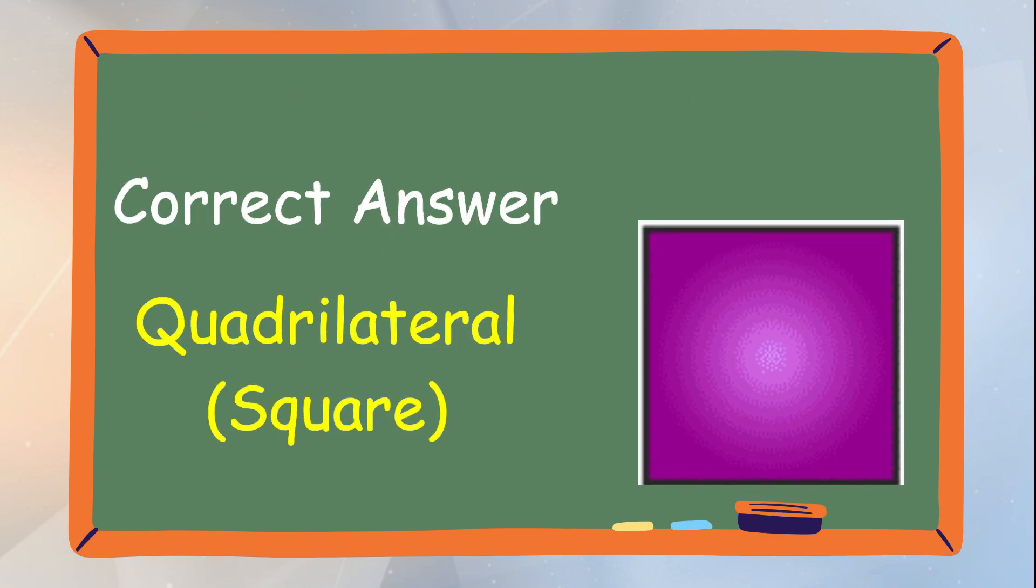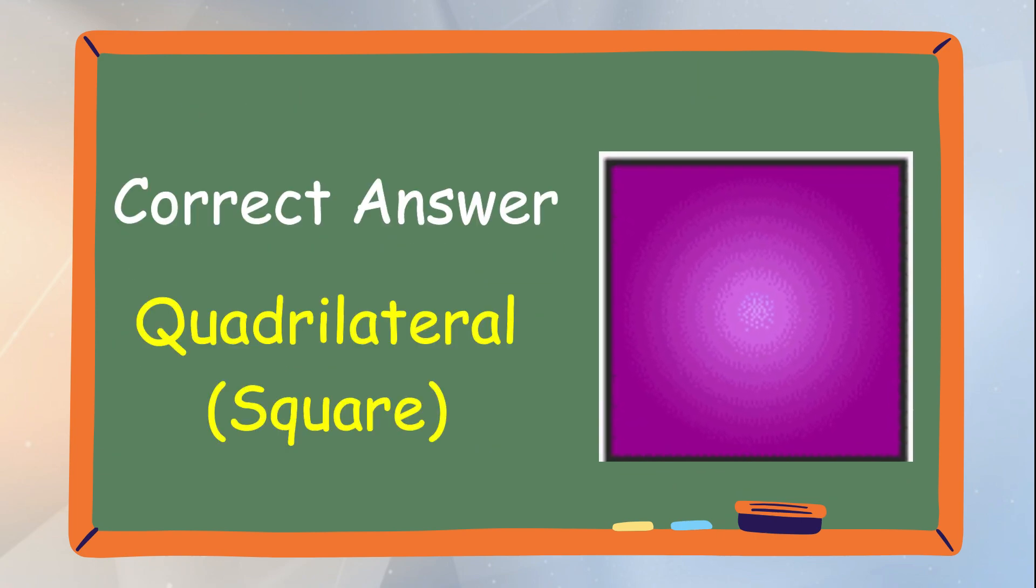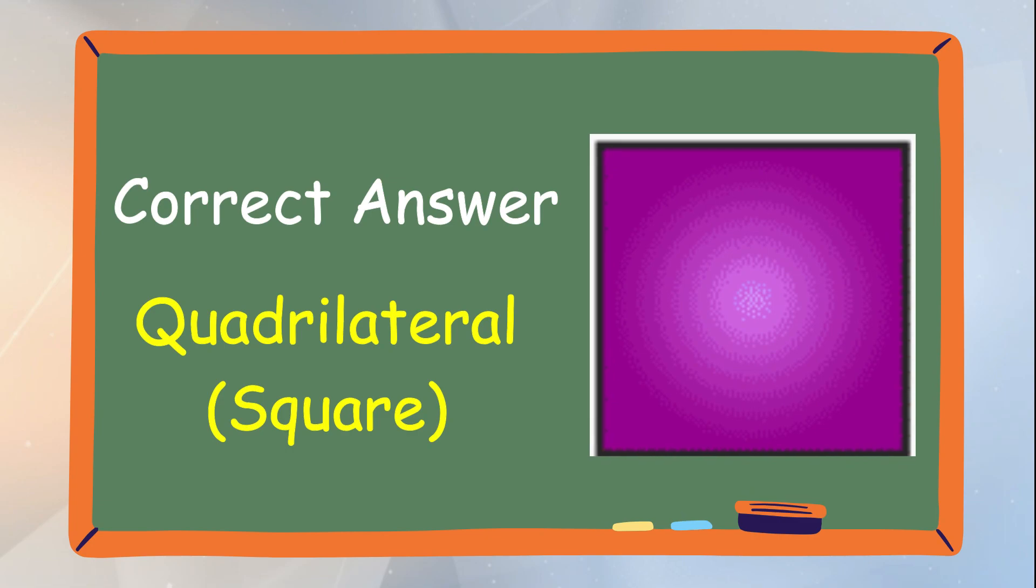Correct! The given polygon is a quadrilateral. It has 4 sides and 4 vertices.